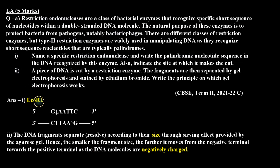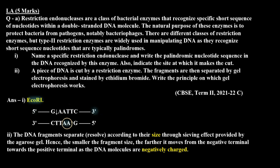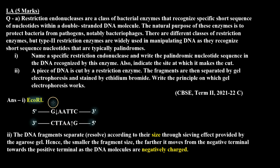For the first part, we give EcoRI as the example of a restriction endonuclease. Its recognition site is 5'-GAATTC-3', and its complementary strand is 3'-CTTAAG-5'. The cleavage site for EcoRI is between G and A on both strands, i.e., between positions two and three, producing sticky ends.